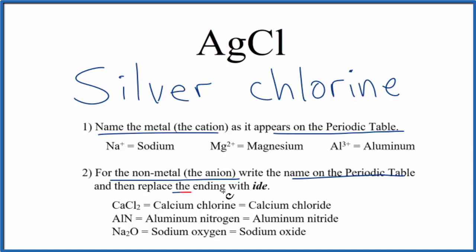Next, we're going to replace the ending with ide. So we get rid of the ine, ide. So the name for AgCl is silver chloride.